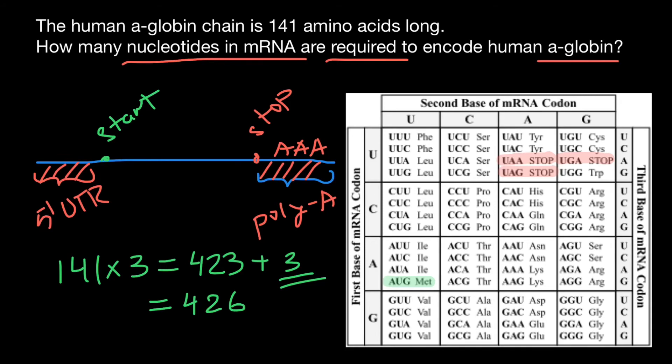But we know for sure that we have to have at least 426 nucleotides that would specify this 141 amino acid chain.